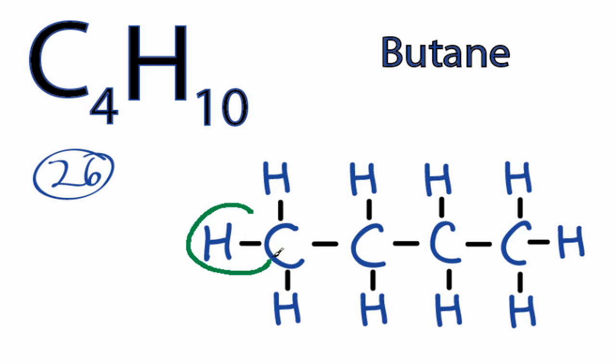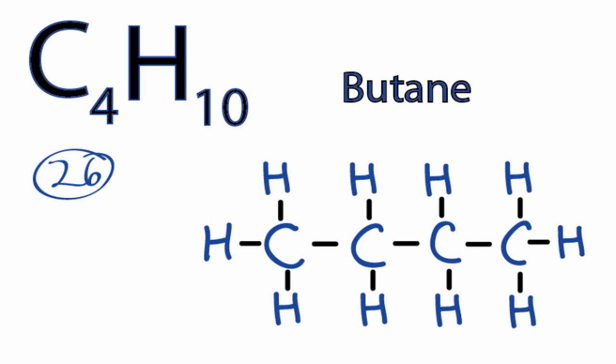Each hydrogen has a single bond, so it has two valence electrons. That means that it has a full outer shell as well. So we've used all the valence electrons that we had for C4H10, and everything has an octet. So we're done with the Lewis structure for C4H10 butane.